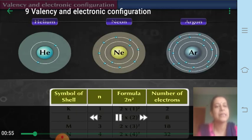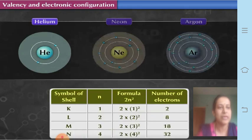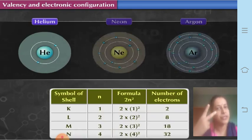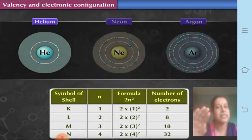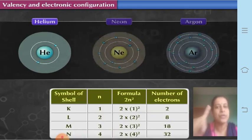Helium, neon, and argon are the inert gases. Now, if you see the helium atom, its atomic number is two, and therefore it has two electrons. The atomic number is related to the number of protons, and the number of protons equals the number of electrons. Since atomic number is two, it has two protons and two electrons.